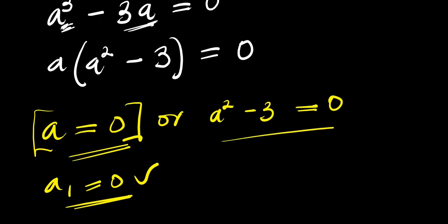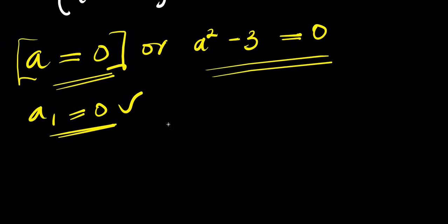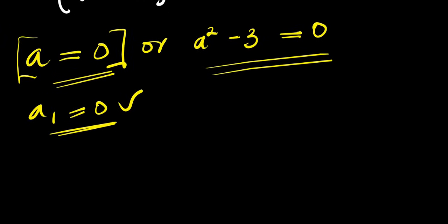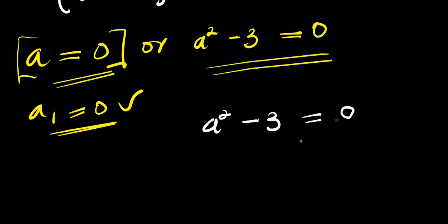Now we need to solve a squared minus 3 equals 0 to find the other values of a. Let's copy it down: we have a squared minus 3 equals 0.